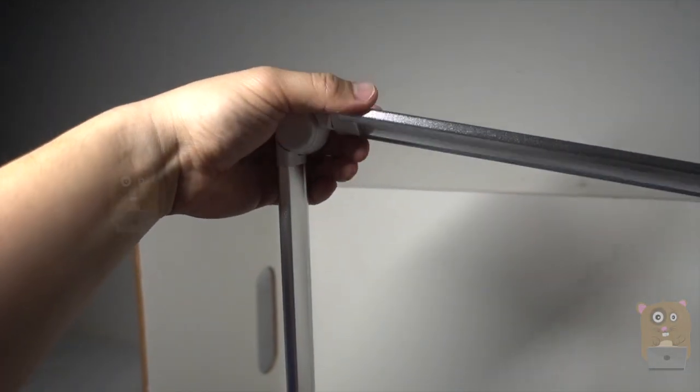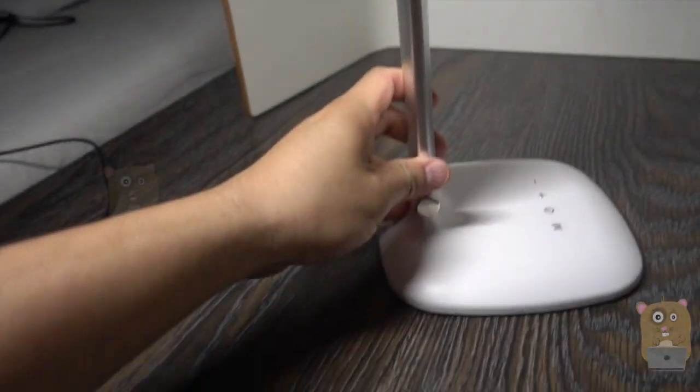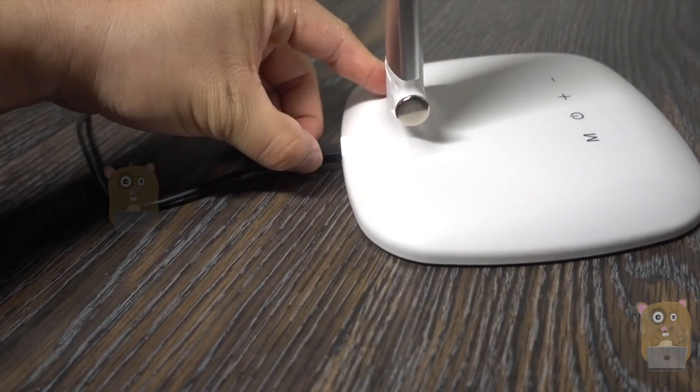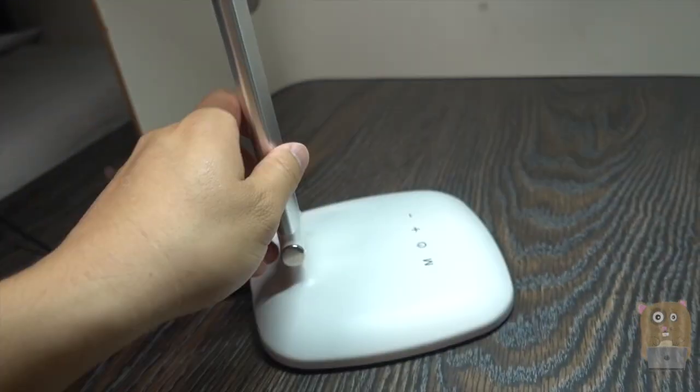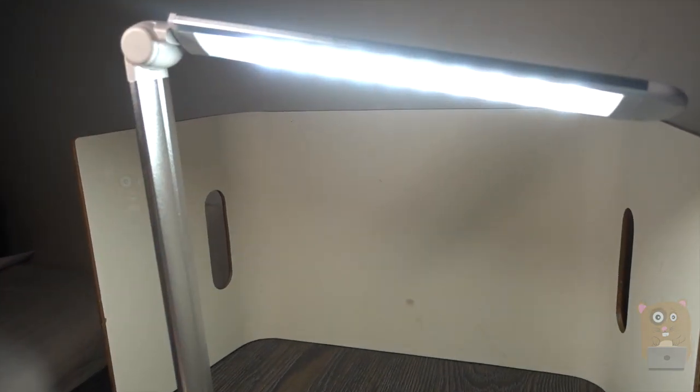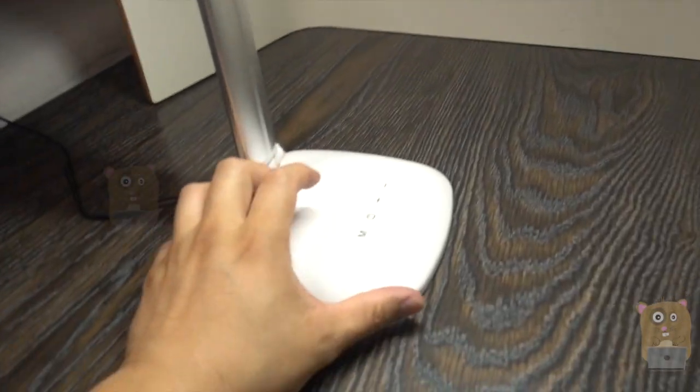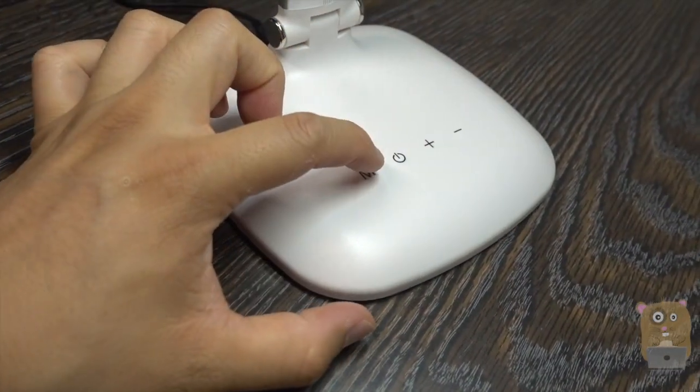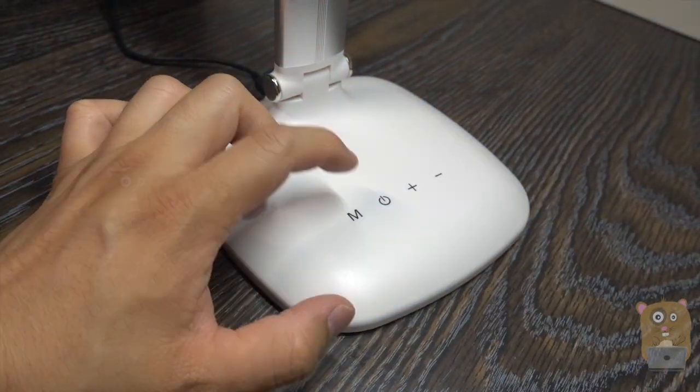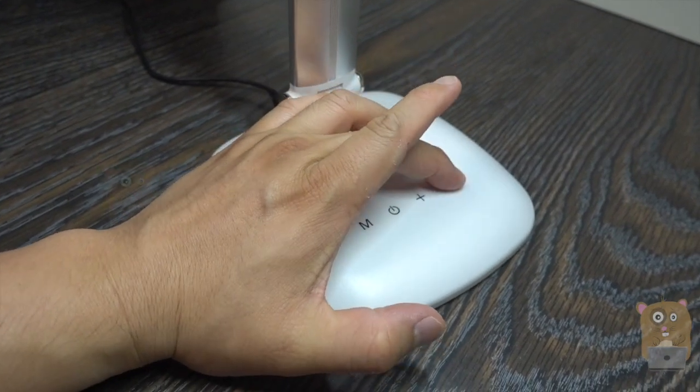Let me plug this in. Here, very nice color output. I can also change the color temperature if I wanted by just pressing the M for mode. Now it's warmer, daylight, morning, reading. I can also adjust the brightness over here to the brightest.